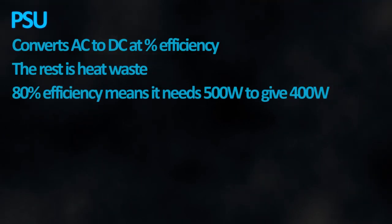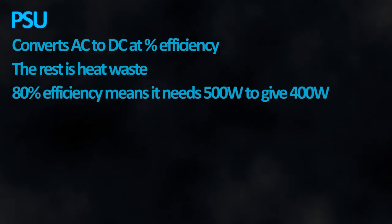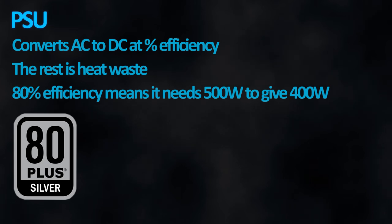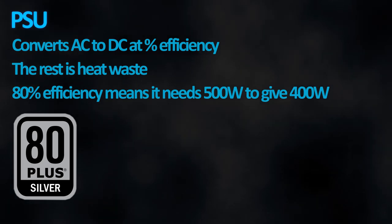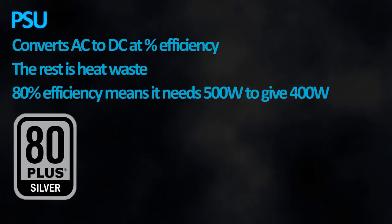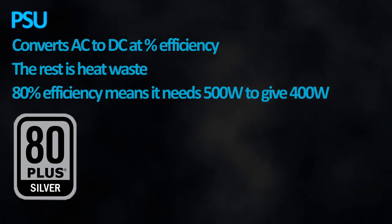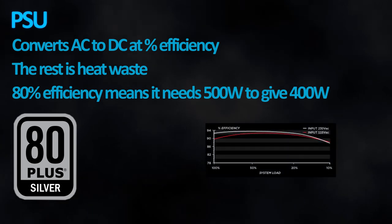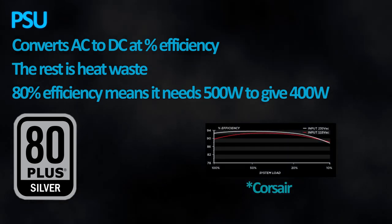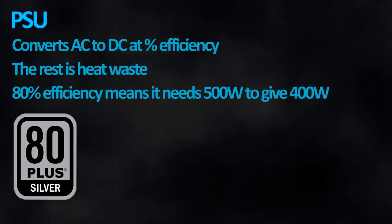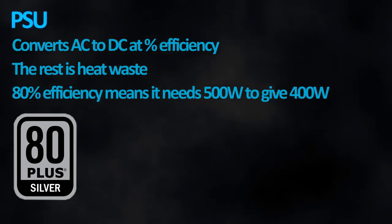The PSU, or power supply unit, is simple. It converts from alternating to direct current at a specific efficiency ratio — for example, if the PSU is 80% efficient, it will need 500 watts to deliver 400 watts, leaving the 100-watt difference as heat. Some PSU manufacturers even provide graphs of efficiency regarding total load. And if you have a laptop like me, you're in luck — you can't know the efficiency and it will probably burn your house down.